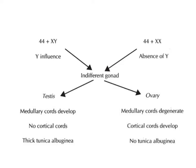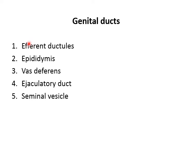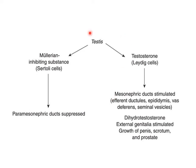In the male, the genital ducts include the efferent ductules, epididymis, vas deferens, ejaculatory duct, and seminal vesicle. The testes secrete testosterone from the Leydig cells and Müllerian inhibiting substance from the Sertoli cells. Testosterone from the Leydig cells stimulates the mesonephric duct, resulting in development of the efferent ductules, the epididymis, the vas deferens, and the seminal vesicle. Dihydrotestosterone is responsible for development of the external genitalia — the penis, scrotum, and prostate.